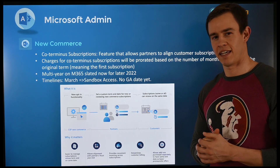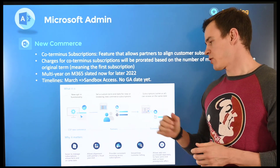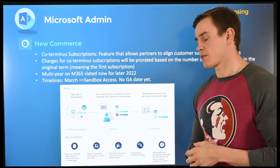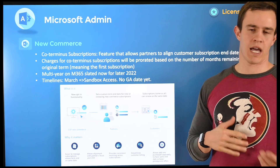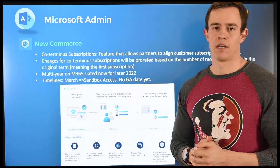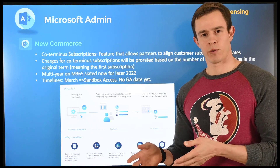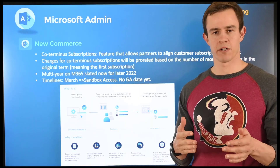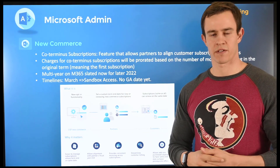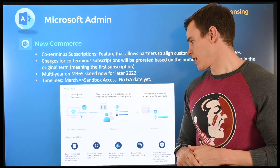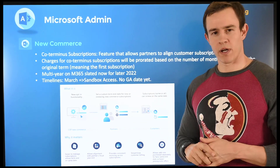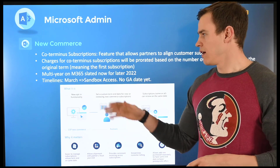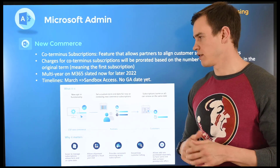Last is NewCommerce — I can't get away from a monthly update without talking about it. One big announcement is making customer subscriptions coterminous. Today, if you purchase a new NewCommerce subscription you get one renewal date, and a subscription purchased six months later gets its own separate date. They're changing that policy so new subscriptions mirror the original subscription's renewal date. Billing will be prorated based on the time remaining in the initial subscription. There are a lot of asterisks here, so I'll have more detail on my blog.